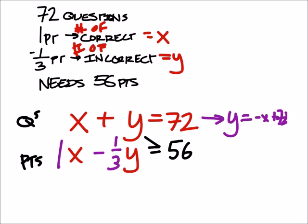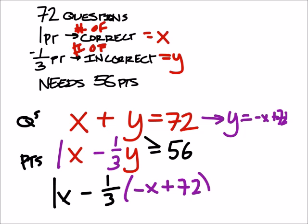So in this second equation, or inequality, I'm going to replace my Y with that negative X plus 72. So I have X minus one-third, but my Y now gets replaced with negative X plus 72. And this should be greater than or equal to 56 points.